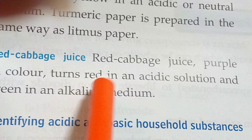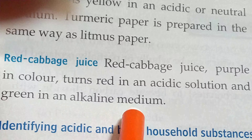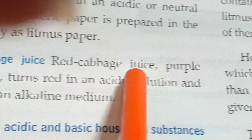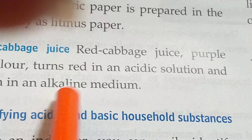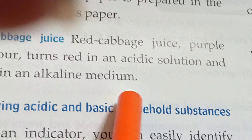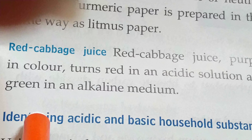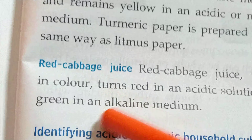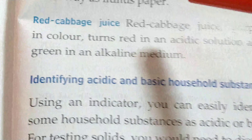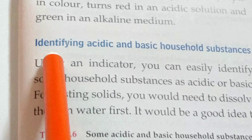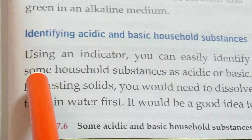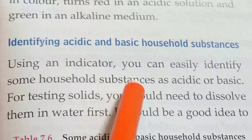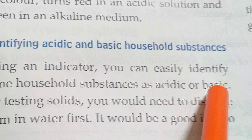Red cabbage juice turns red in acidic solution and green in alkaline medium. So normally red cabbage juice is purple in nature, but it turns red in acidic medium and green in alkaline medium. So these are the household indicators.